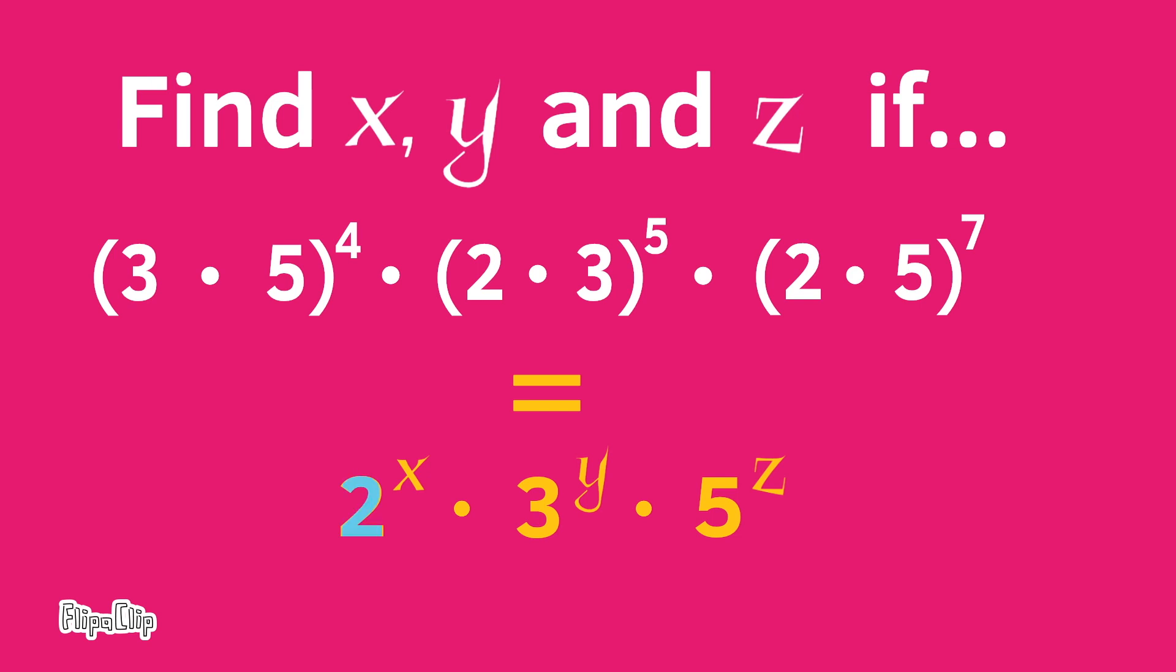We can see that we have the base number 2 twice. The first base number 2 has the exponent 5, and the second base number 2 has the exponent 7. And 5 plus 7 is 12, or 2^5 × 2^7 = 2^12.